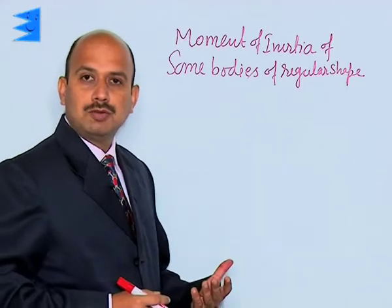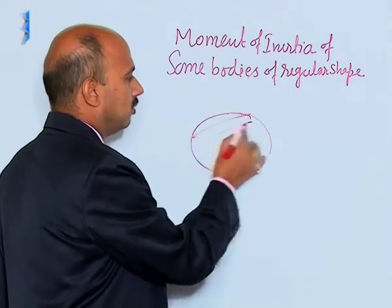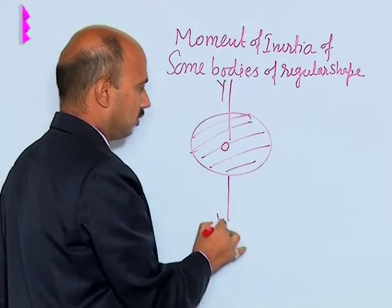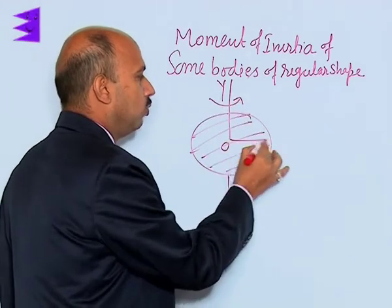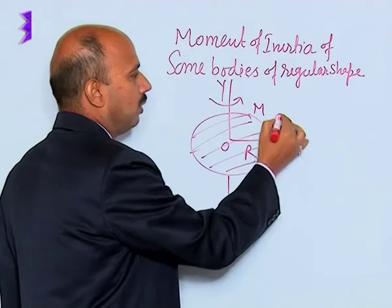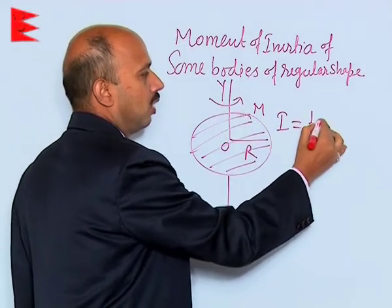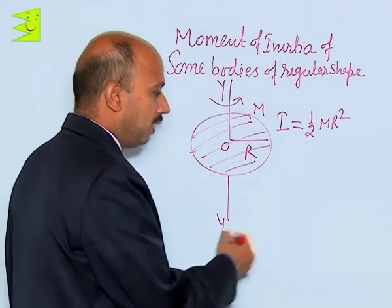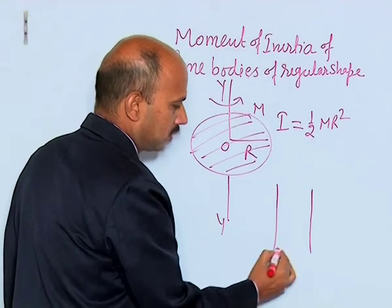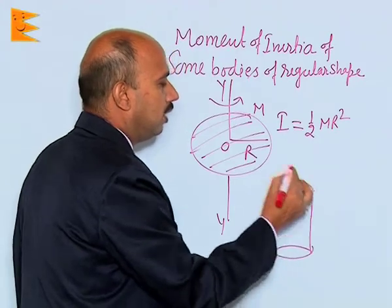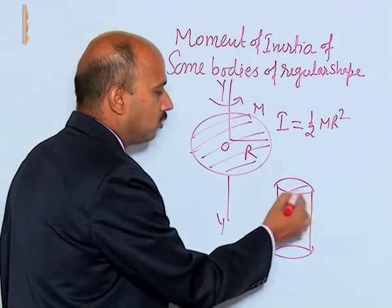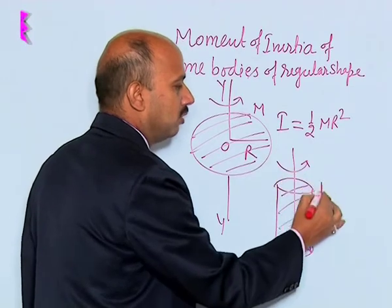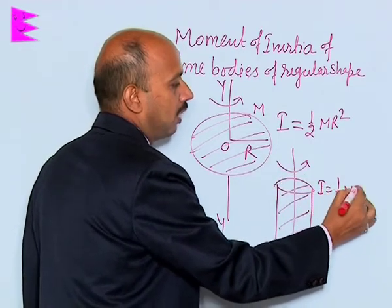We have seen the moment of inertia. Suppose you have got a disk — this is the disk — and you want to calculate the moment of inertia about this axis. The disk is rotating like this, whose radius is r and mass is m. We can write moment of inertia about this axis is equal to half m r squared. Similarly, if you have taken a solid cylinder rotating about this axis, its moment of inertia about this axis is also equal to half m r squared.